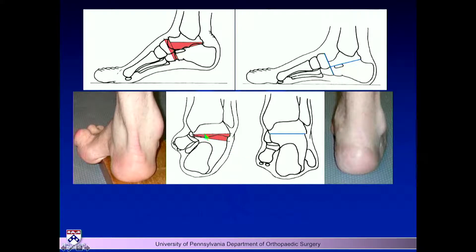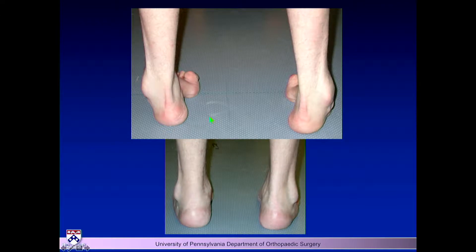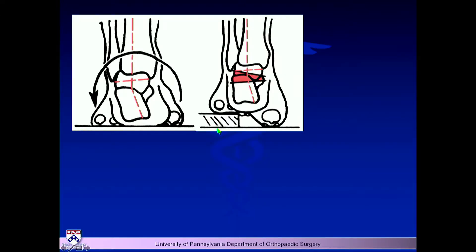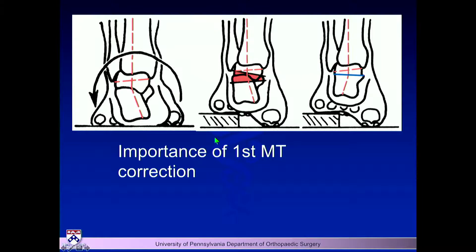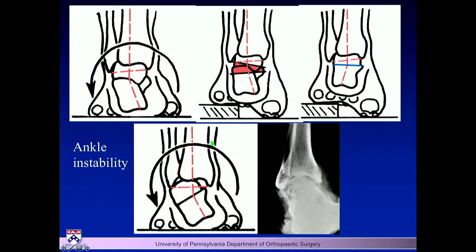With an extremely rigid forefoot deformity, you need to create valgus of the heel using biplanar osteotomies — a wedge through the subtalar joint in one plane and another plane as well — to go from the deformed position to the corrected position. Weight-bearing CTs are very helpful for planning this correction. Critically, if you correct the hindfoot you must also correct the forefoot, and you must assess for ankle instability.